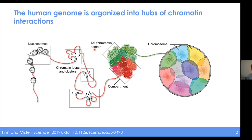If you zoom in even further, you can look at the beads-on-a-string model visible under a microscope, where the DNA wraps around nucleosomes. Looking at all these different structures of the DNA inside the cell, you can see that at different length scales, different structures emerge. These patterns aren't just random — they have biological properties associated with them. For this talk, I'm really going to be focusing on this middle branch: the loops, the clusters, the topologically associated domains.